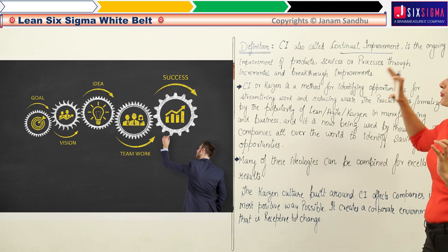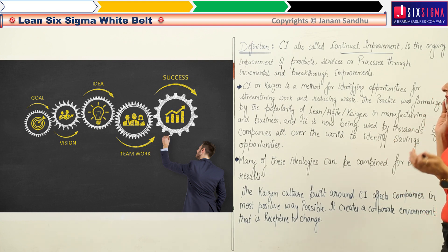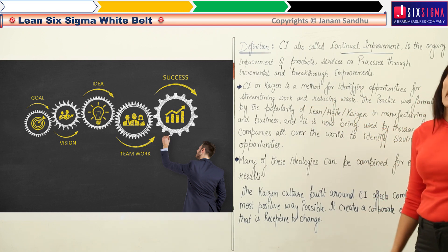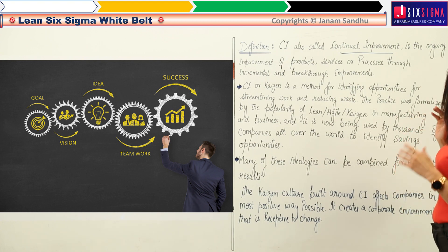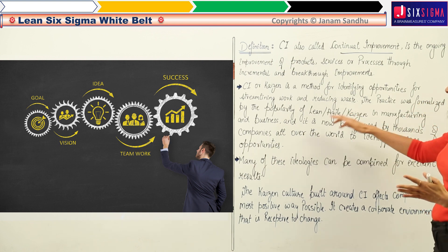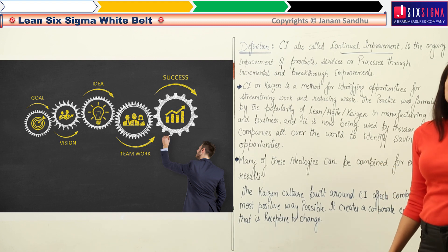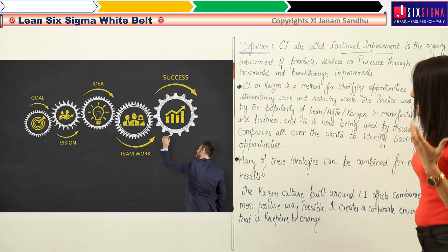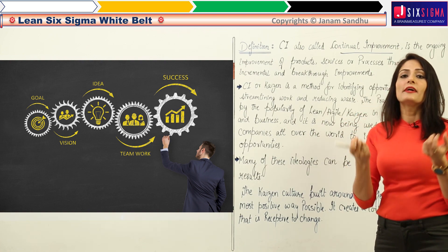Moving on to the definition: continuous improvement — also called continual improvement — is the ongoing improvement of products, services, or processes through incremental and breakthrough improvements. Continuous improvement or Kaizen is a method for identifying opportunities for streamlining work and reducing waste. The practice was formalized by the popularity of techniques like Lean, Agile, Kaizen, and Six Sigma in manufacturing and business, and is now used by thousands of companies worldwide to bring benefits, save costs, and improve profits.